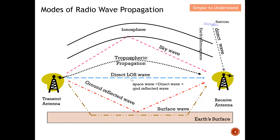Next we have the direct line of sight, which is the shortest distance between the transmitter and the receiver — a direct path with no reflection or distortion. This also includes the direct wave from a satellite all the way to the receiver antenna in one straight line.